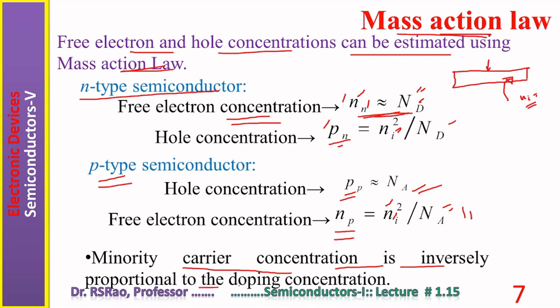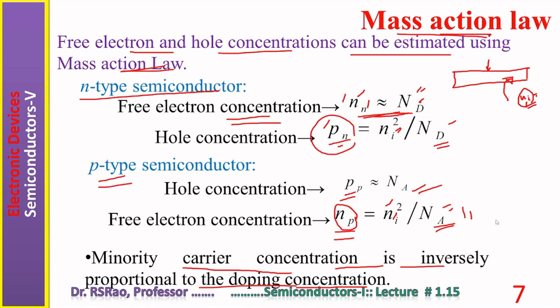Minority carrier concentration is inversely proportional to doping concentration. As you add more and more impurities, minority carrier concentration becomes smaller and smaller — less than n_i — whereas before impurity addition, both minority and majority carrier concentrations are equal to n_i.